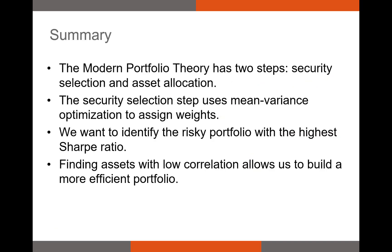To summarize: we introduced modern portfolio theory with its two steps — security selection and asset allocation — and focused on security selection in this video. That step uses mean variance optimization to assign weights targeting the highest Sharpe ratio. We also discussed the value of finding assets with low correlations, which allows us to build a diversified portfolio with high returns but relatively low standard deviation. In class, we'll actually optimize portfolios using the Solver program in Excel. If you have any questions, please feel free to reach out. Thank you.